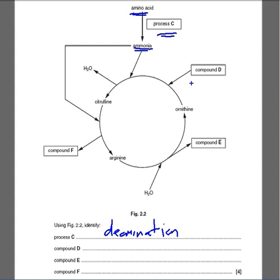Then it asks for compound D. Now compound D, which is what joins into ornithine, is carbon dioxide, CO2. Compound E, this is urea. And compound F, which comes off right here. So this is H2O.